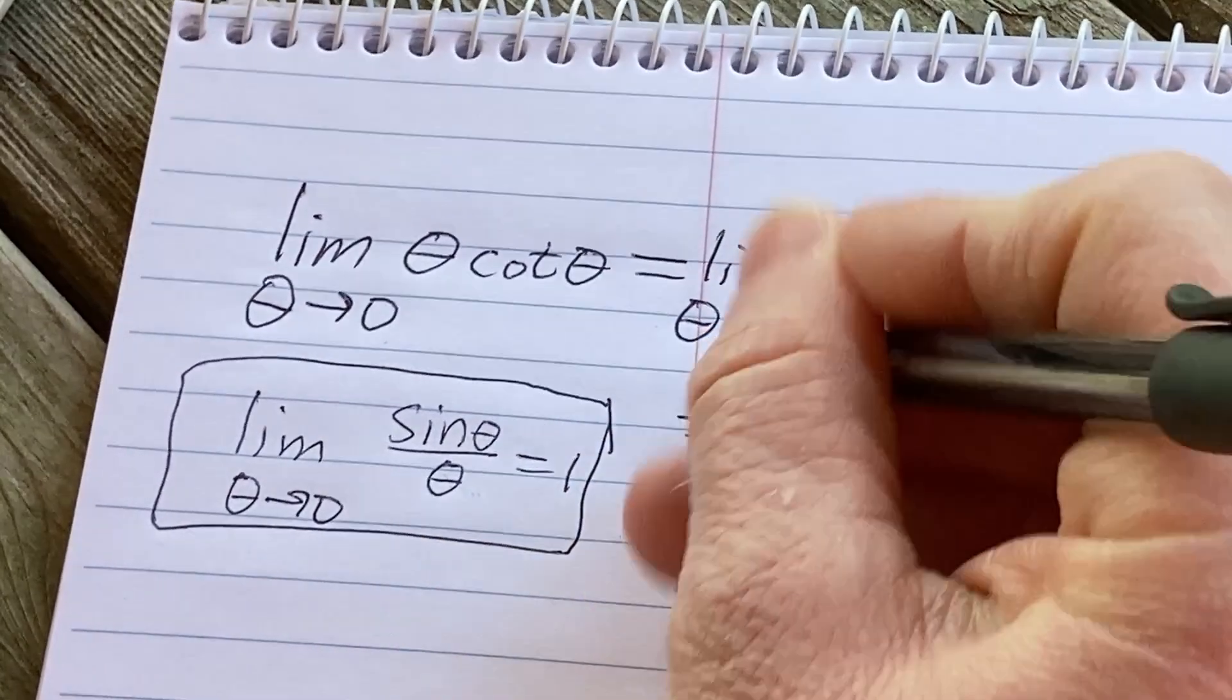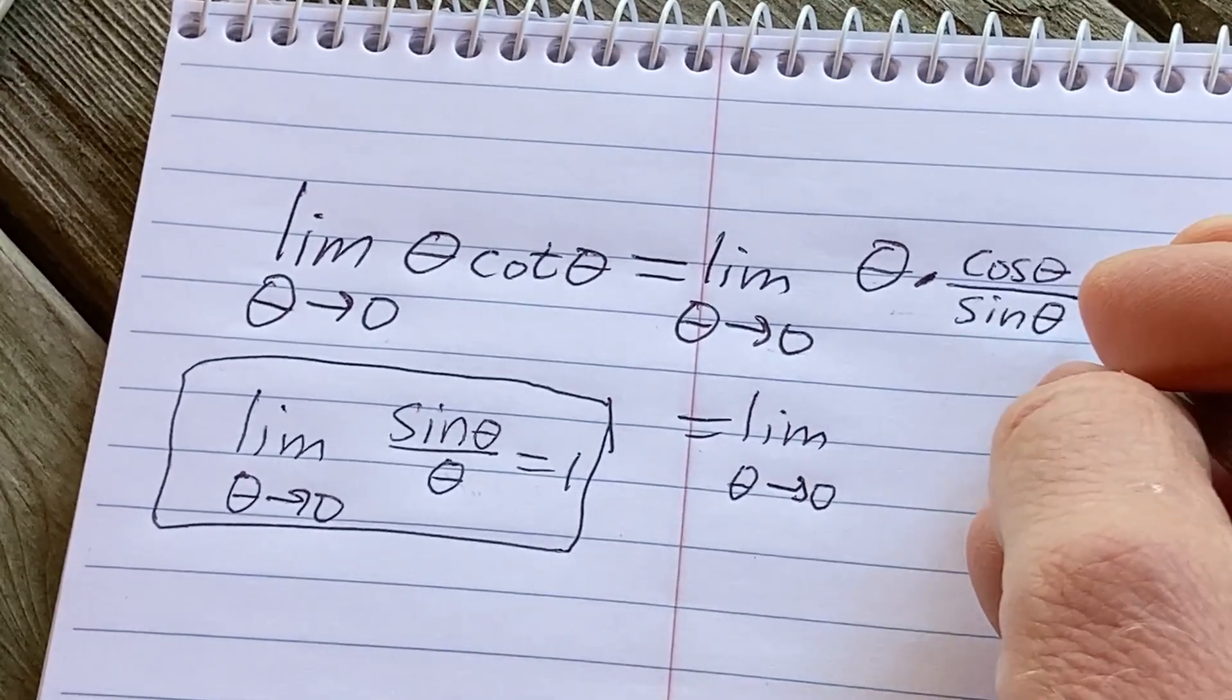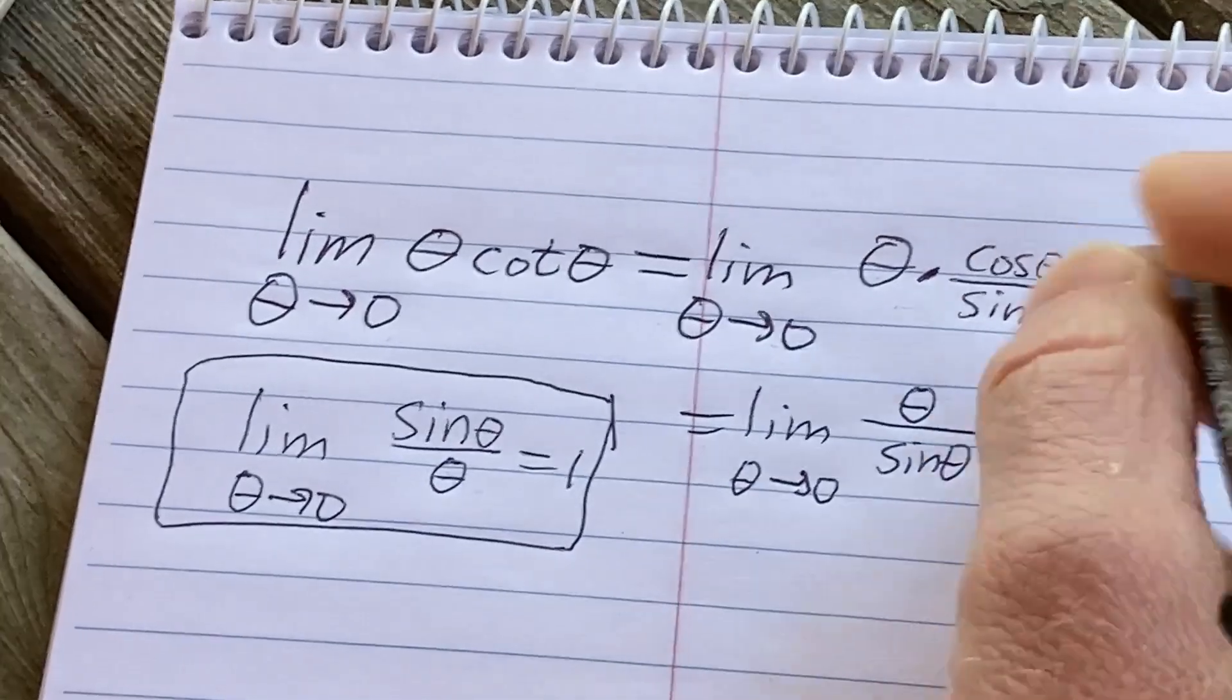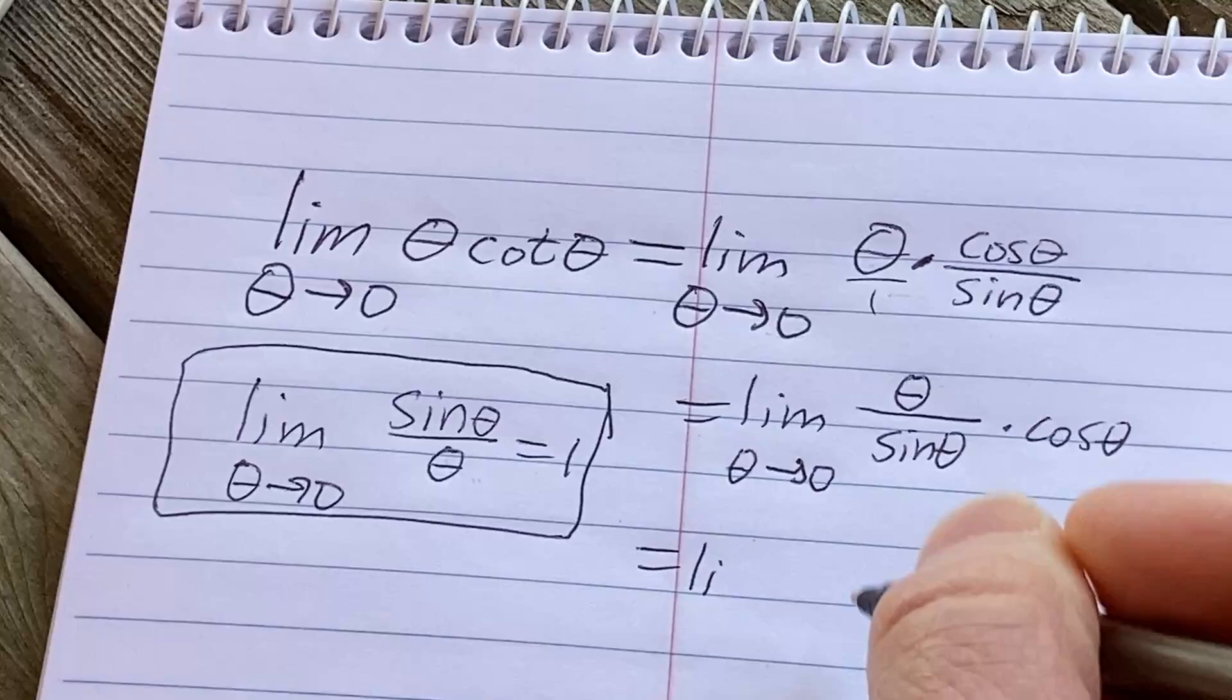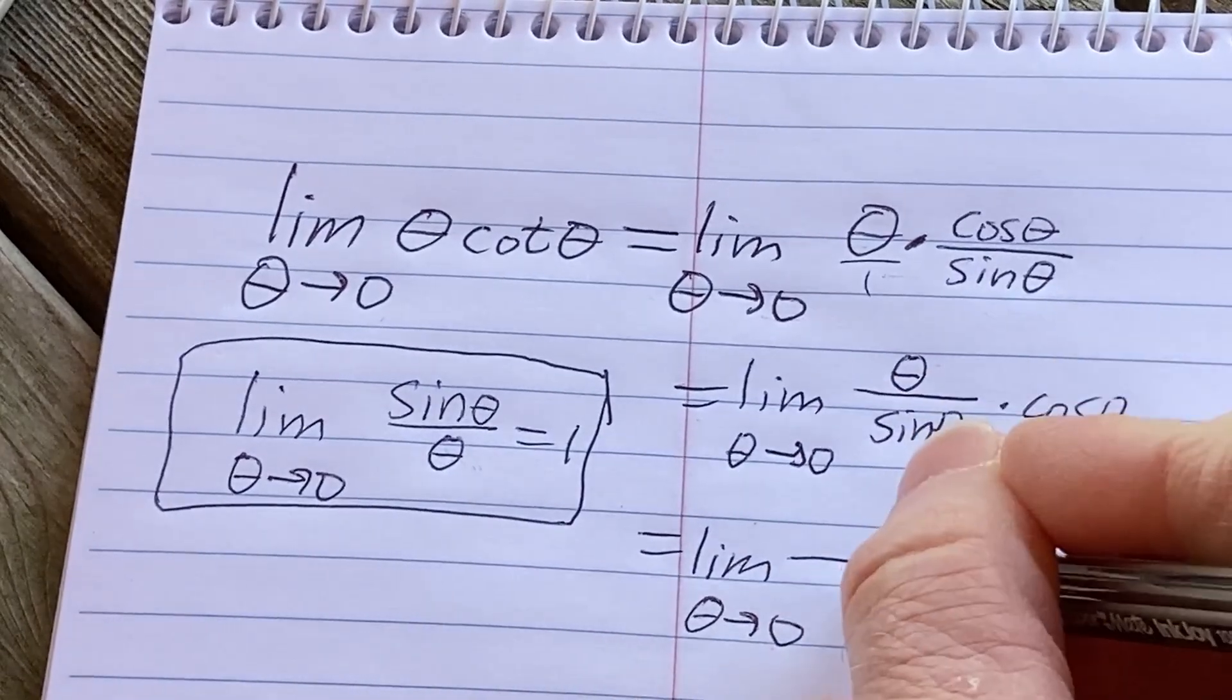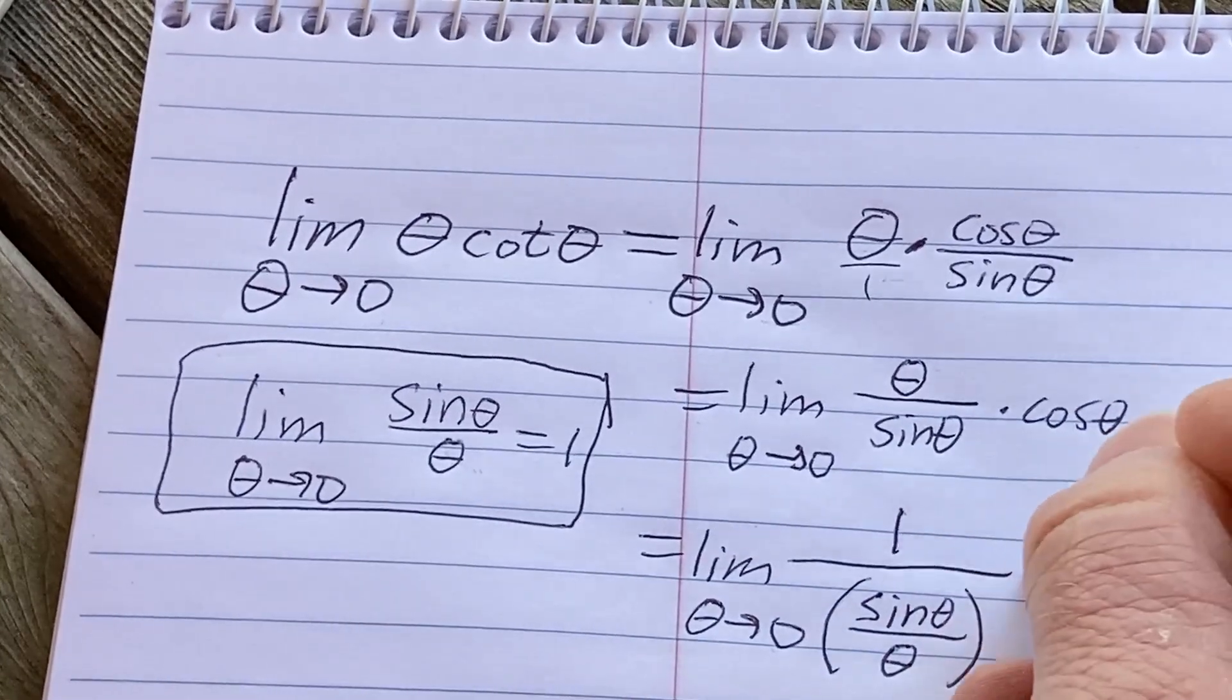So let's rewrite this so that we can somehow incorporate this fact. So continuing, this is equal to the limit as theta approaches zero, and I'm going to do it in two steps just to make it a little bit easier for you to see. First I'm going to write it like this: theta over sine theta times cosine theta. So we can do that right because this is really over one, there's no issues there.